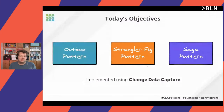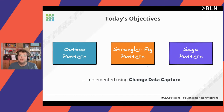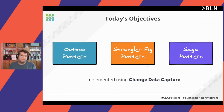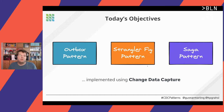We are going to talk about three different patterns. The first is the outbox pattern, which allows us to exchange messages between microservices safely. Then we'll cover the strangler fig pattern, which helps us move to microservices from a monolith. And lastly, the saga pattern, which allows us to coordinate long-running transaction flows across multiple services.